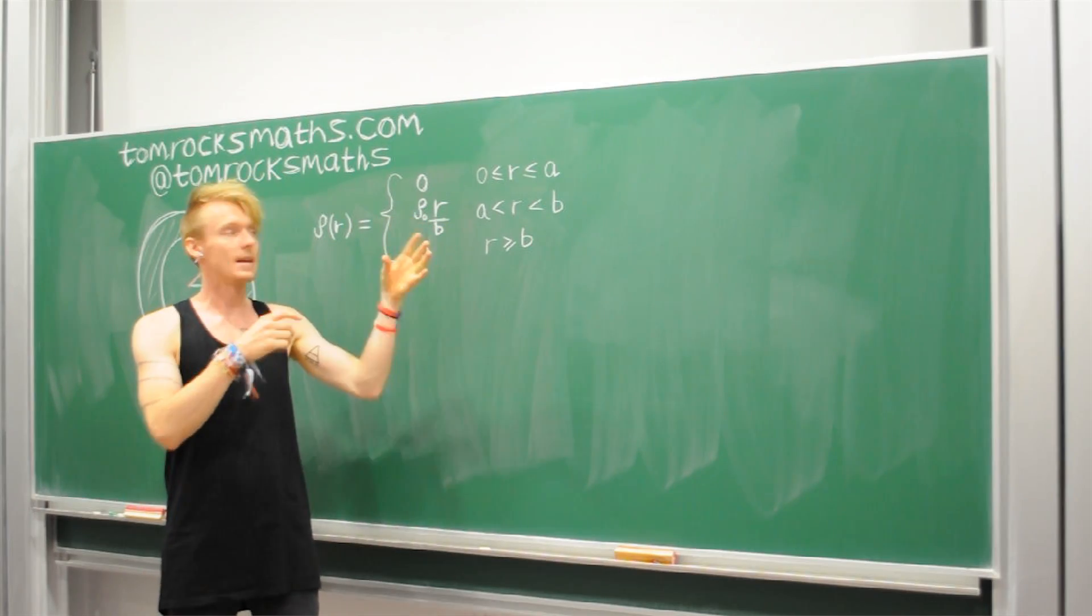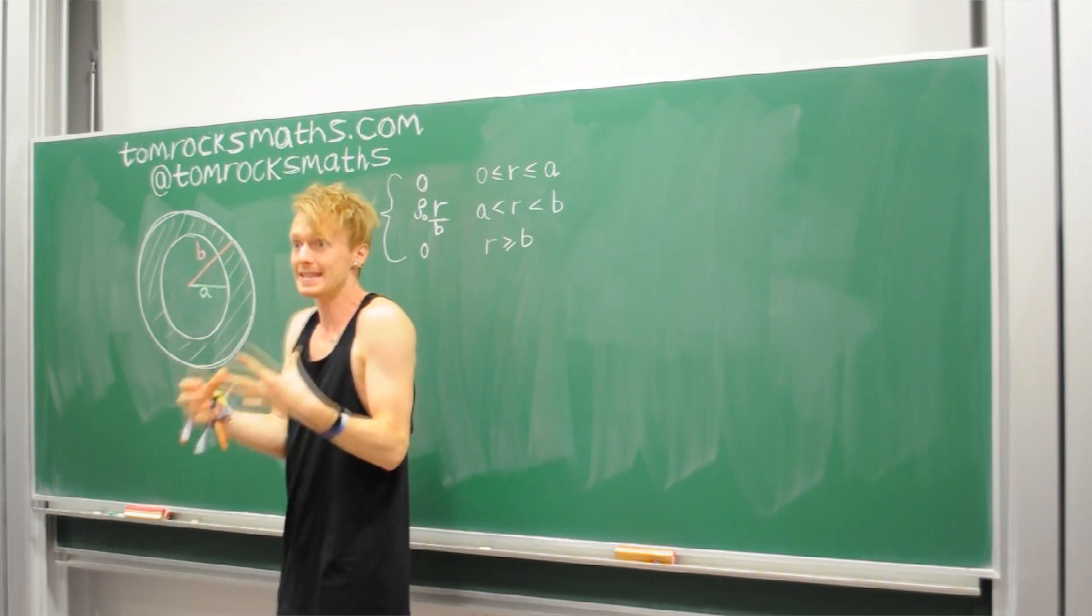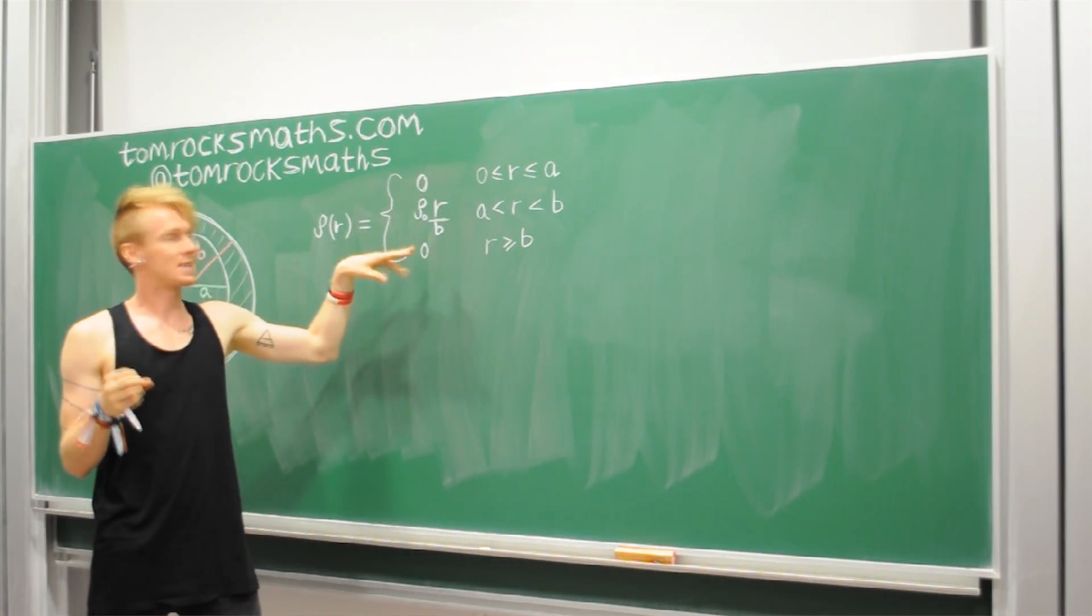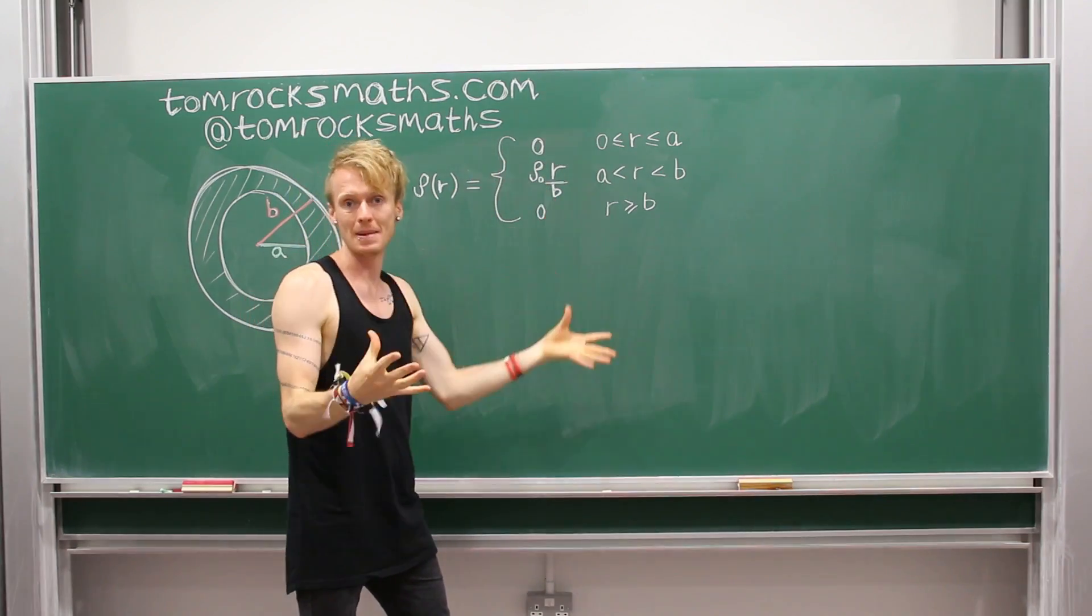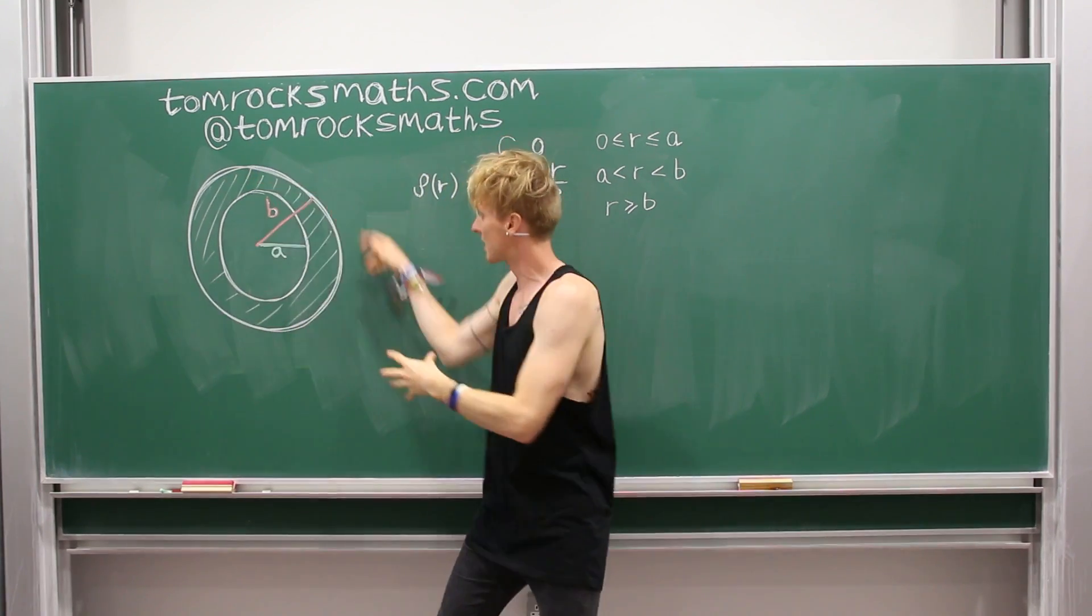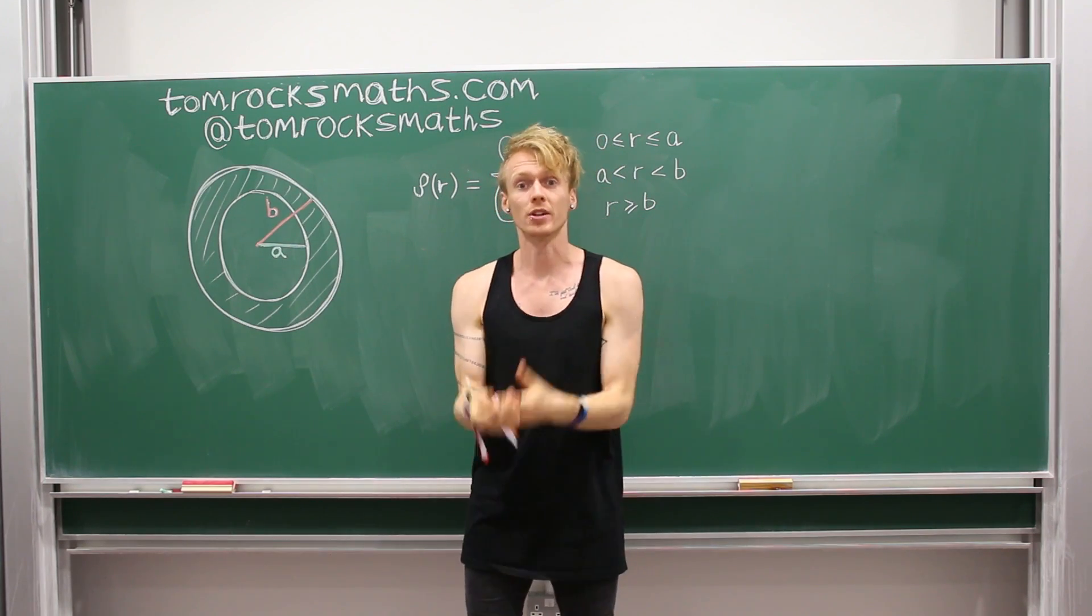When we move between the radius of A and the radius B, so inside the shell where there is Earth, there is mass, the density is given by this function, which I'll come to in a minute. And then for the radius greater than B, so outside of our Earth, the density is also zero.